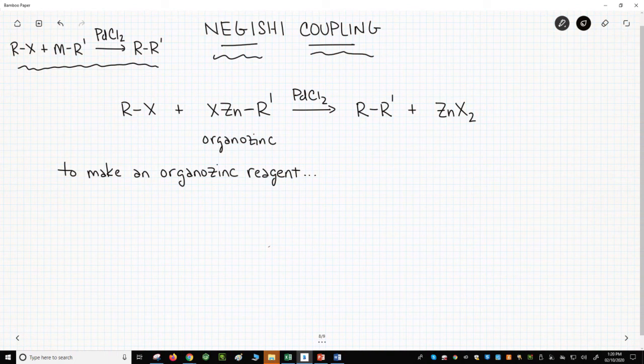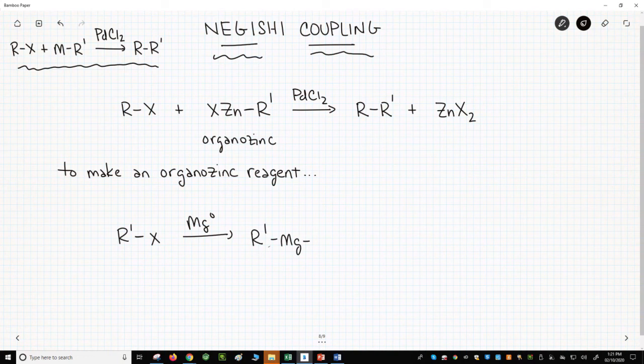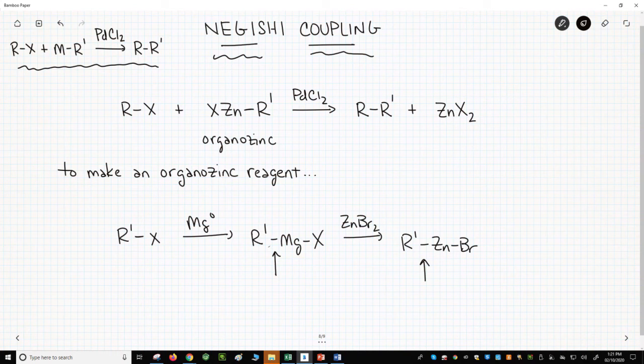Organozinc reagents are often made from Grignard or organolithium reagents. So to make the organozinc, start with a halide, R'X, treat it with magnesium zero, metallic magnesium, to make the Grignard reagent, then treat the Grignard with zinc bromide. This is technically a transmetallation because we're replacing the R'-magnesium bond with an R'-zinc bond.